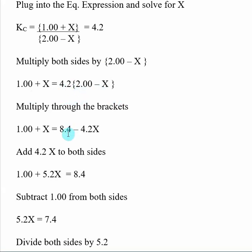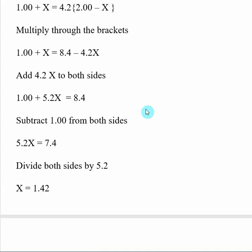So 4.2 times 2 is 8.4, and 4.2 times minus X gives us 4.2X. Then I add 4.2X to both sides. So 4.2X on the left gives us 5.2X, and then 4.2X minus 4.2X on the right-hand side gives us 0.